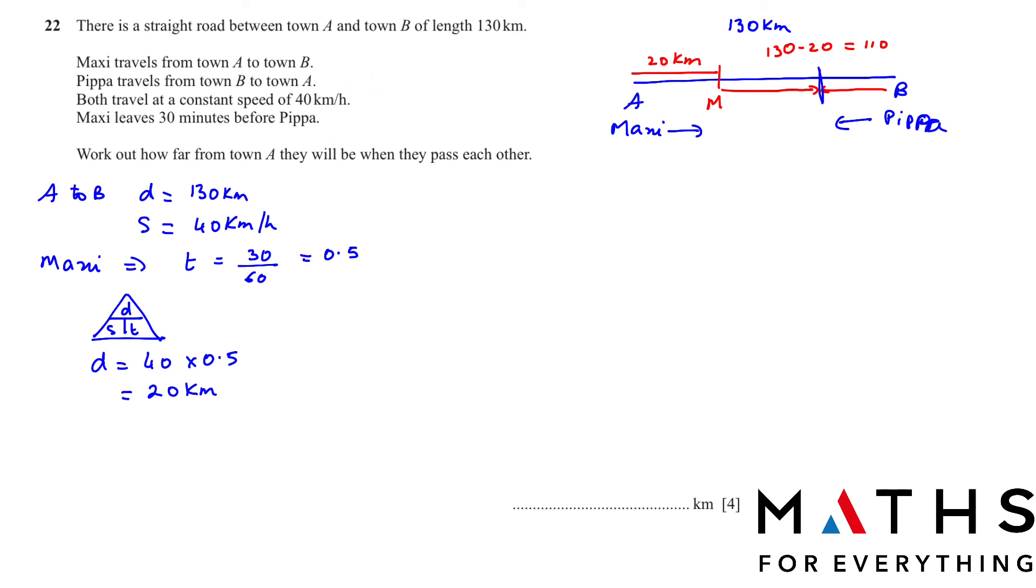They will meet at 110 divided by 2, which is 55 kilometers. What we are looking for is how far are they from town A. So this is 55 and this is 20. Therefore, distance from town A is 20 plus 55, which is 75 kilometers.